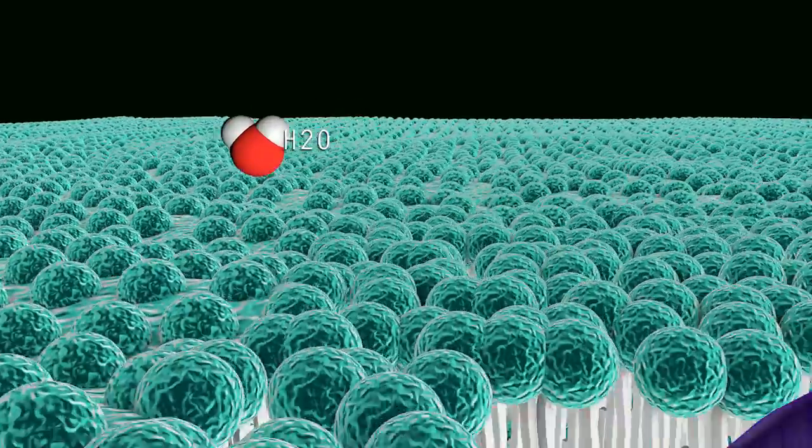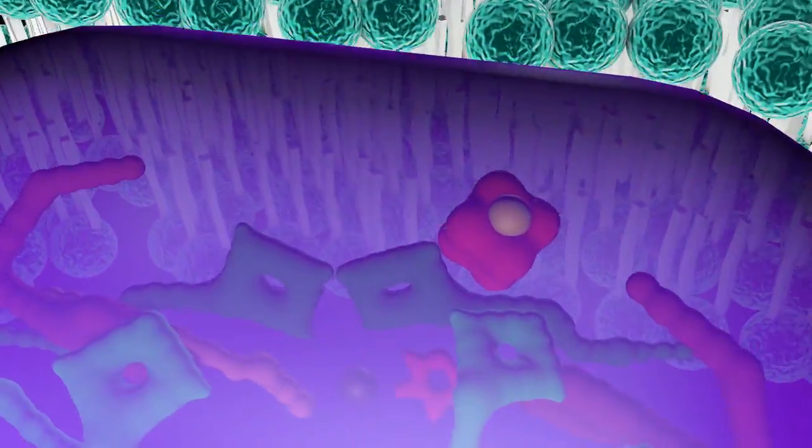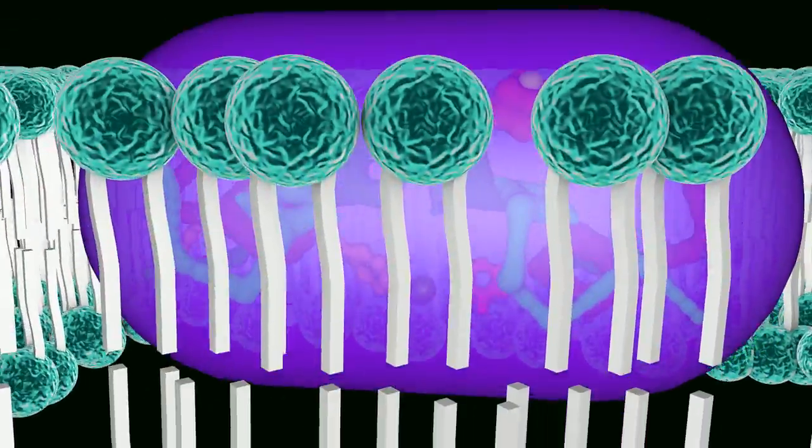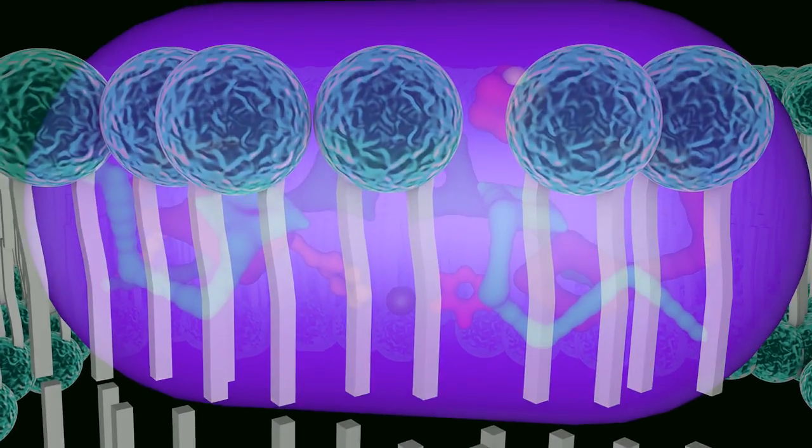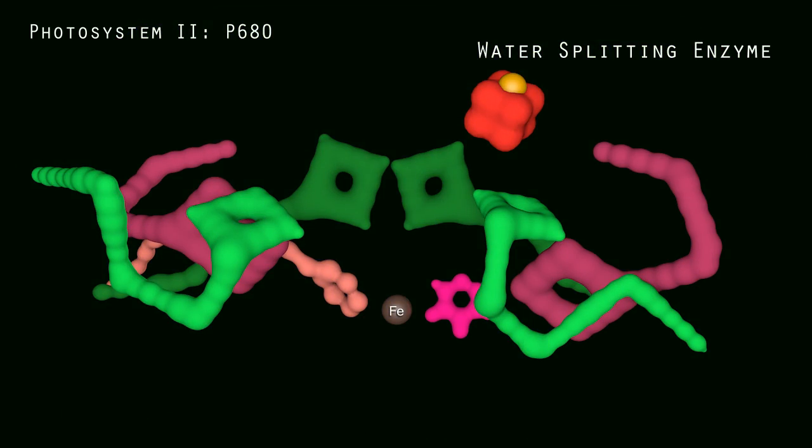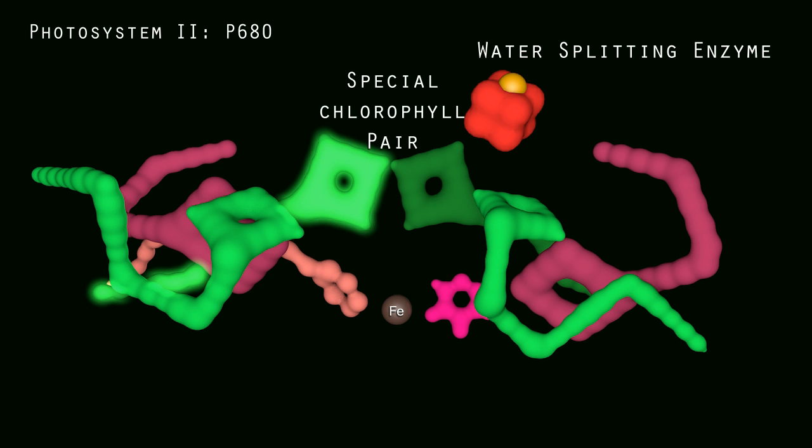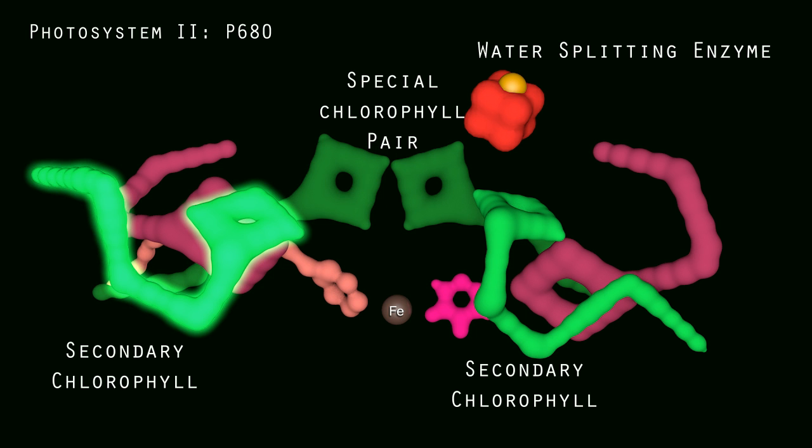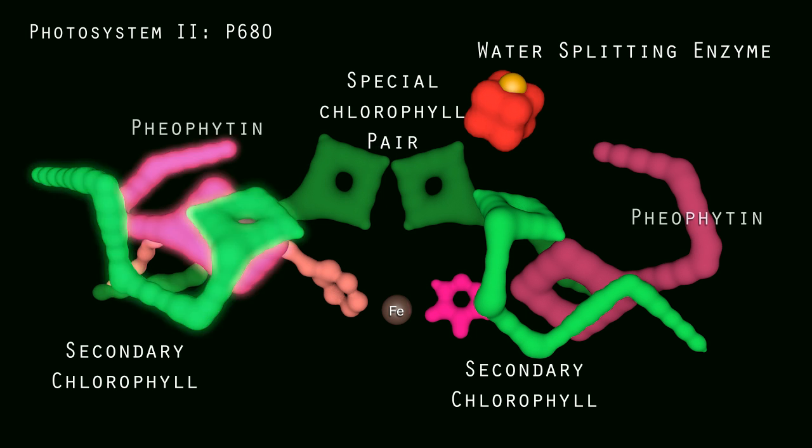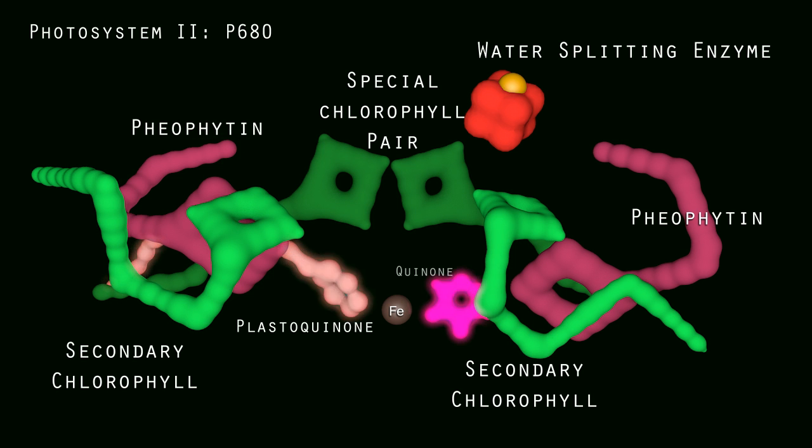The thylakoid membrane contains two types of photosystems acting cooperatively. A water splitting enzyme first converts water into oxygen, replacing electrons lost by photosystem II. Upon activation, a special pair of chlorophyll in the P680 reaction center releases an electron that moves quickly away through a series of electron acceptors to reduce a quinone.